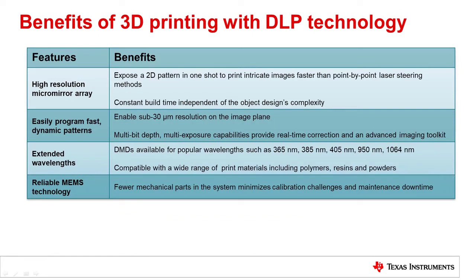DLP technology offers many benefits applicable to any light-based 3D printing method. Using the millions of micromirrors of a DMD to expose 2D patterns, solutions with DLP technology can print 3D object layers with constant build times independent of an object's complexity. DLP technology provides micron-level resolution, which allows for printing very detailed and fine quality objects. In addition, the DMD can digitally switch within microseconds and allows multiple exposures for a single print layer. 3D print system solutions can monitor and adjust imaging parameters for finest features and real-time optimizations of the print process using DMD controller features for advanced imaging.